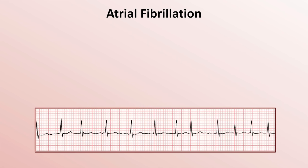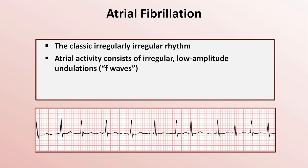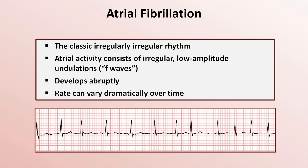Here's an example of AFib. It is the classic irregularly irregular rhythm, meaning it is both irregular and there is no repeating pattern to that irregularity. The atrial activity consists of irregular low-amplitude undulations, often called fibrillation waves or F-waves with a lowercase f. Those undulations can sometimes be unusually prominent or more organized, but as long as they occur at a very fast frequency with variable morphology, it is still best to consider the rhythm AFib. Unlike sinus tach, which occurs gradually, AFib develops very abruptly.